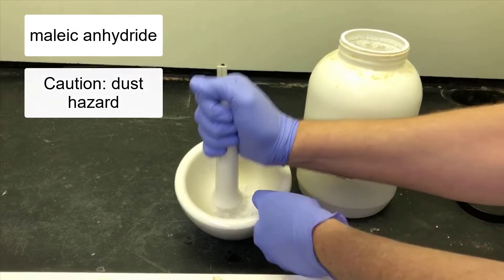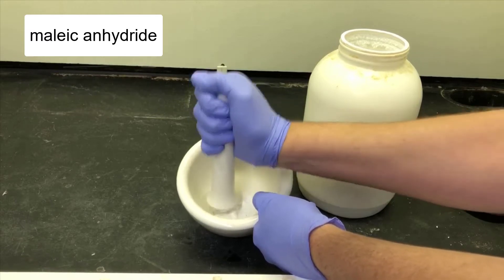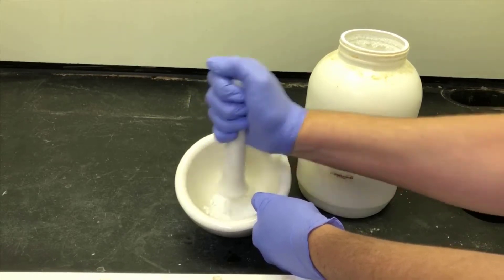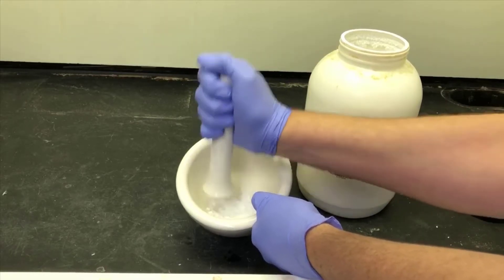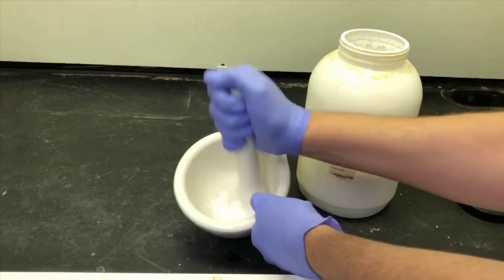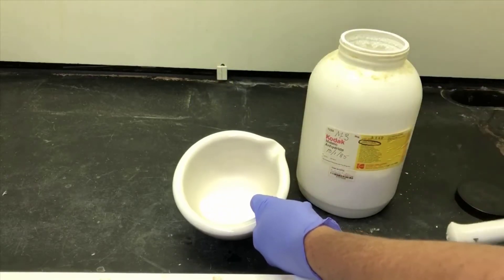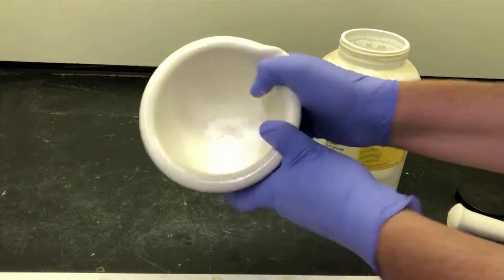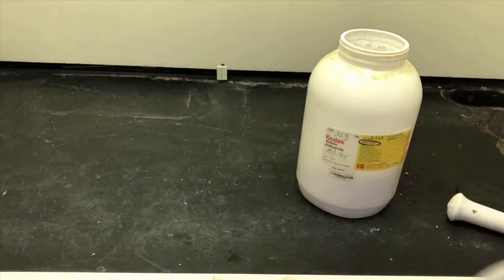The bottle you have may already be ground into a powder and if that's the case, that's fine. I'm grinding far more than I'm going to need for this experiment here. I'll take the excess and either give it to a classmate that needs ground maleic anhydride or put it in a bottle that says ground maleic anhydride for the next student to use. It should not be put back in the original bottle. Now that I have it ground, I can go weigh it out.